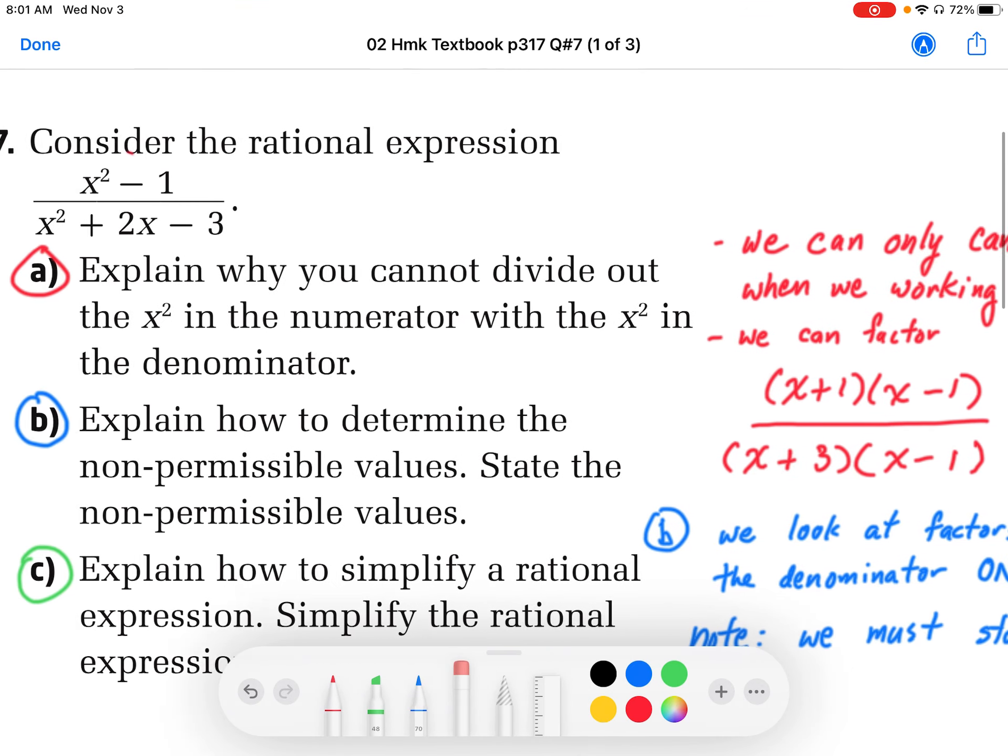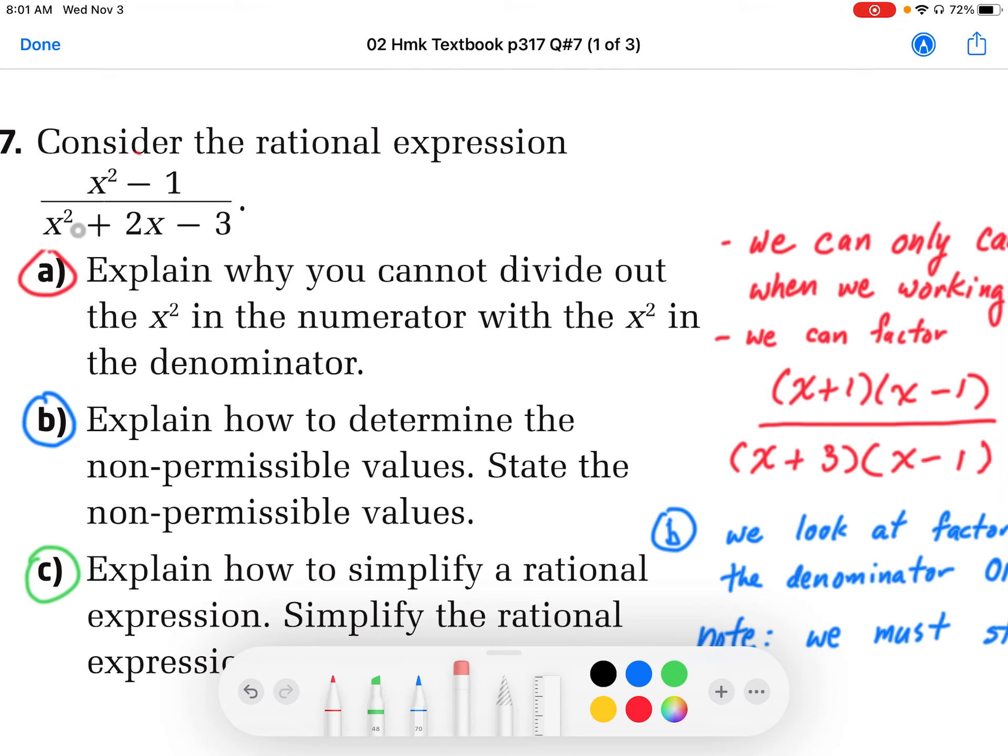Okay, and this here, this x squared, both of these x squareds, these are both addition and subtraction elements. They are not factors, they're not times and divide pieces. Fractions are all about times and divide, so we cannot cancel those out.